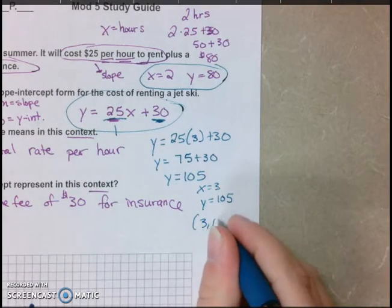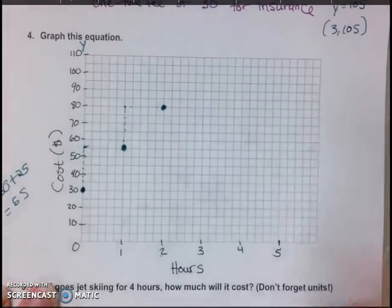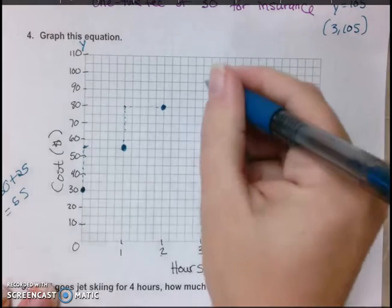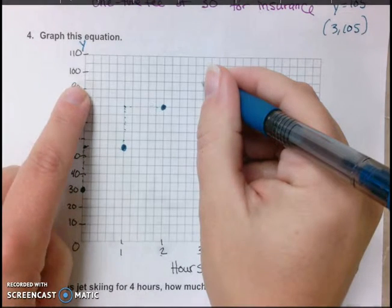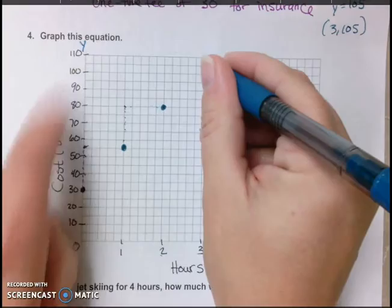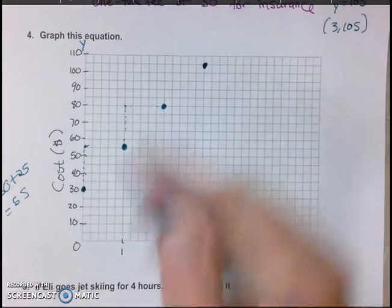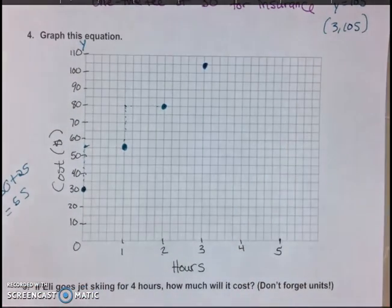And plus that $30 insurance fee is going to be 105. So I have, now, when x is 3, y is 105. So that's my coordinate point. You can plot 3, 105 coordinate point there. So my graph, at 3 hours, I go up. I find 105, which is going to be right here. And you see how that lines up perfectly with my dots here? So that's another way you can plot the graph.